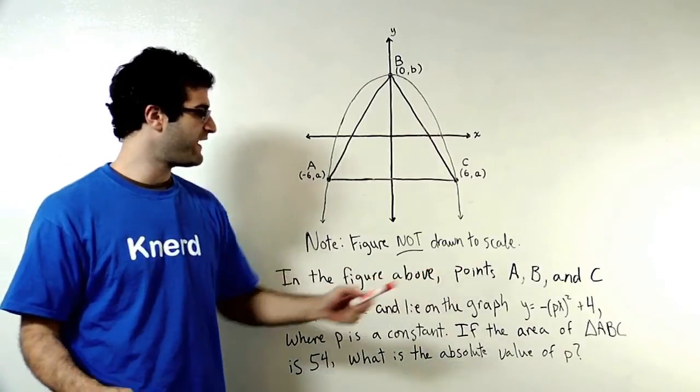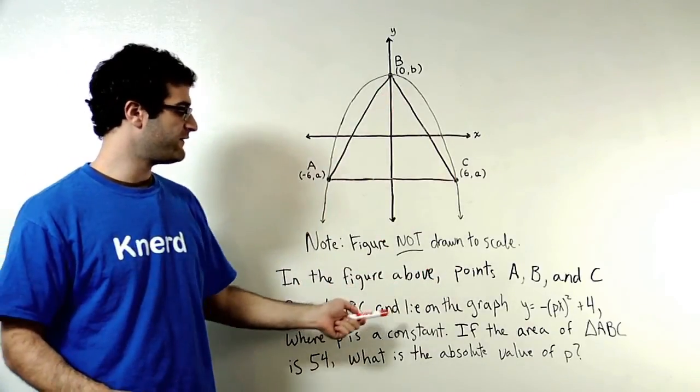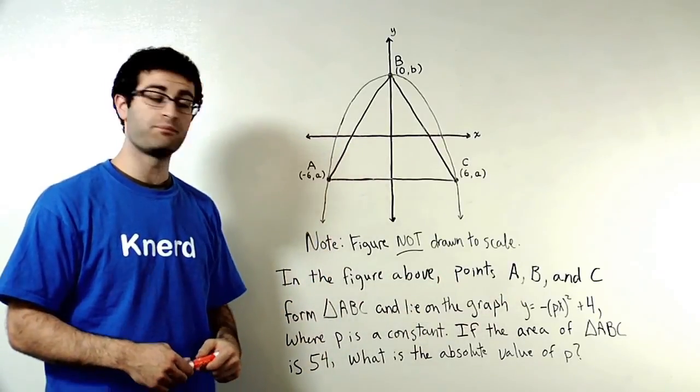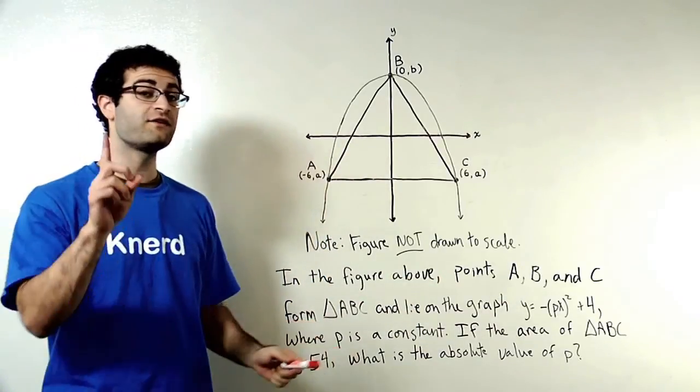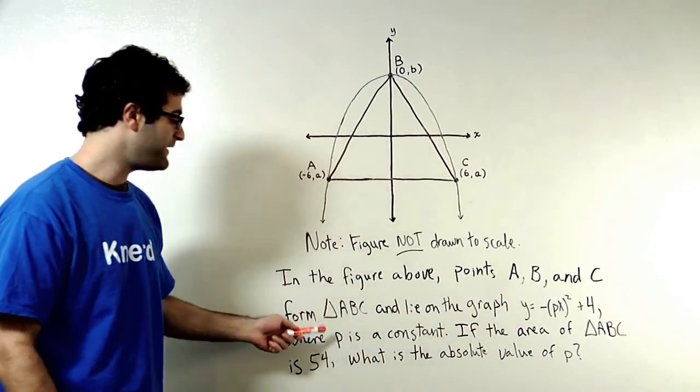In the figure above, points A, B, and C represent the triangle ABC and they lie on the graph Y equals negative PX squared plus 4, where P is a constant. Good to know, P is a constant. X and Y are variables, but P is a constant.